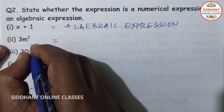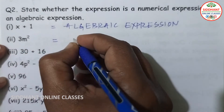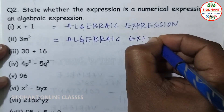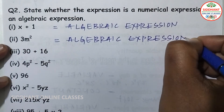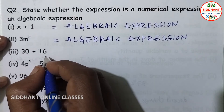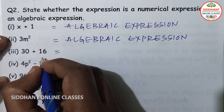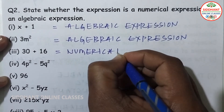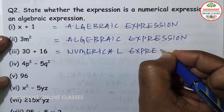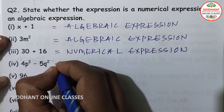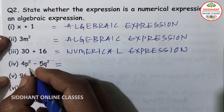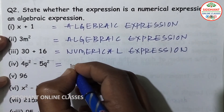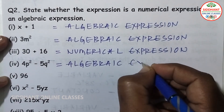Second one — 3m square — m square is a variable term, so it is an algebraic expression. Third one is purely numerical — a numerical expression. Fourth one — 4pq, p square minus 5q square — has variables, so it is an algebraic expression.